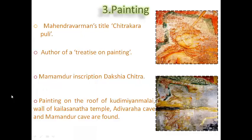Painting: Mahendra Varman's taste for painting is depicted through his title Chitrakarapuli. He was also the author of a treatise on painting, as proved by the Dakshina Chitra inscription found at Mamandur. Traces of paintings are found on the roof of Kudimiyamalai, on the wall of Kailasanatha Temple, Adivaraha Cave and Mamandur Cave.